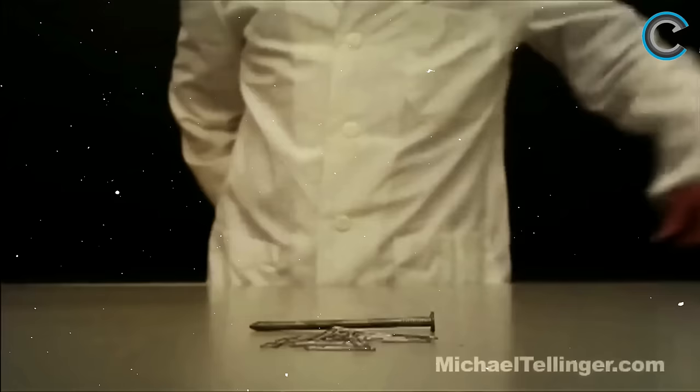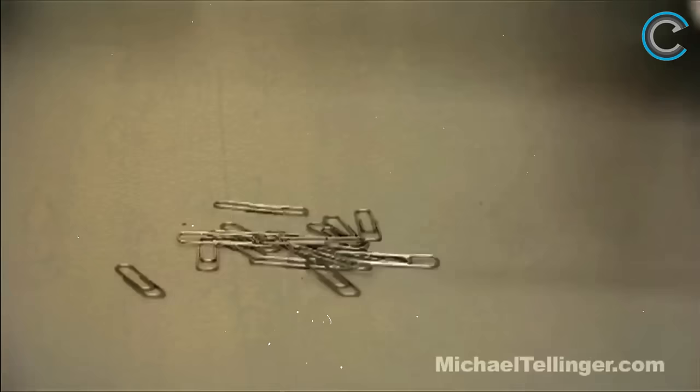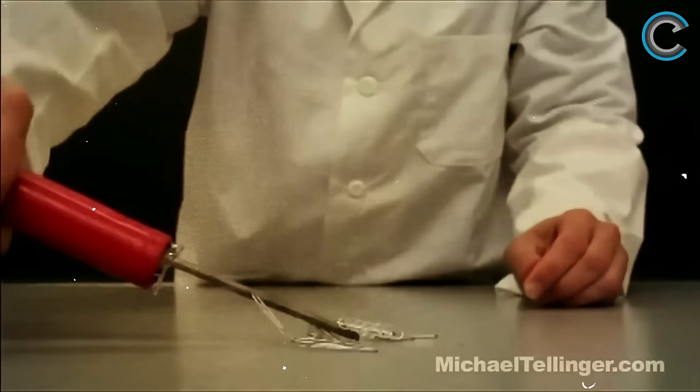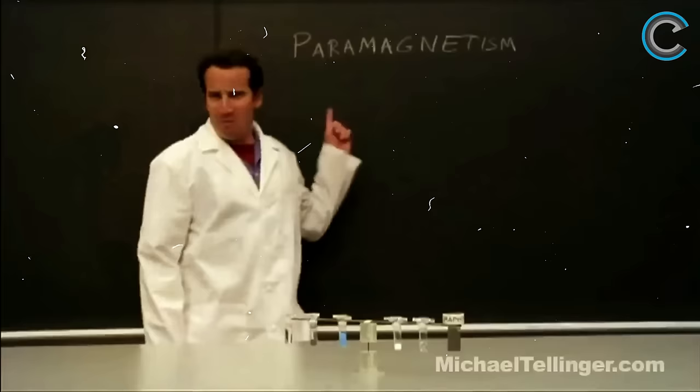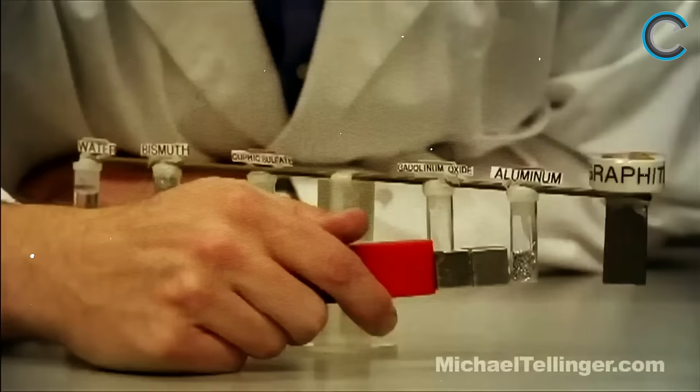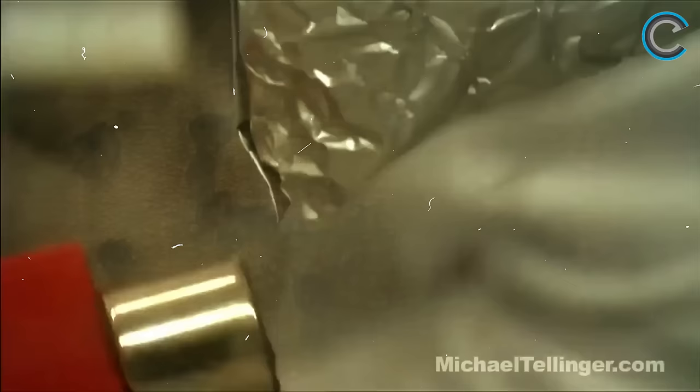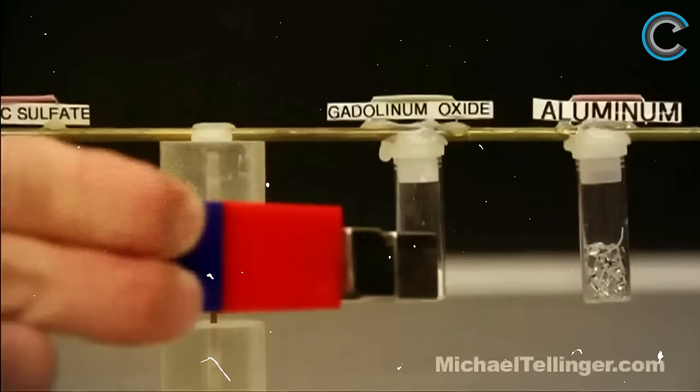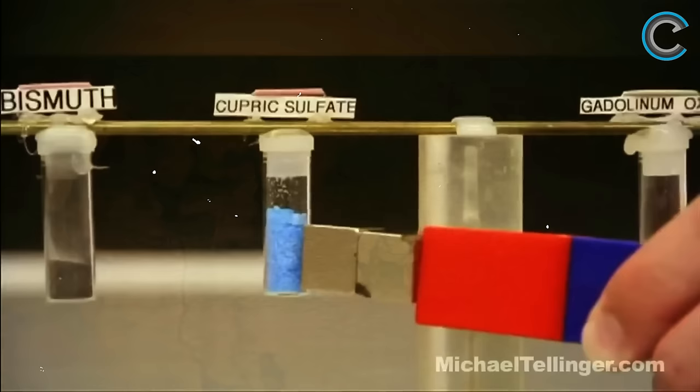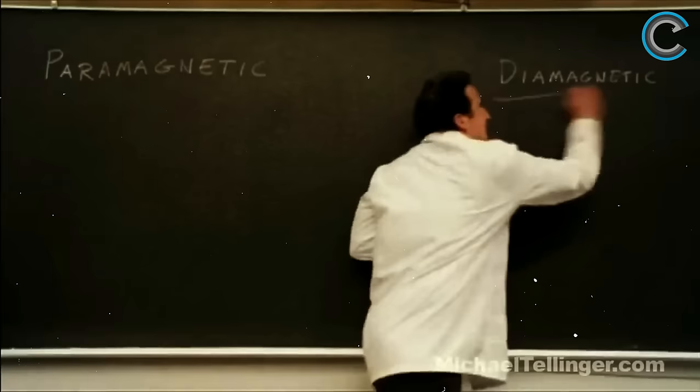You might not think of water as being magnetic, but it is. And so are graphite, aluminum, and glass. You're probably already familiar with ferromagnetism. Ferro means iron. An unmagnetized piece of iron, nickel, or cobalt becomes a magnet in the presence of a magnetic field. Paramagnetism is a similar effect, except it's much weaker and temporary. Aluminum is a good example of a paramagnet, and so is oxygen, which is attracted to magnets. Here, I have a few milliliters of liquid oxygen, which sticks to the magnet. Gadolinium oxide and cupric sulfate are good examples of paramagnetic substances.